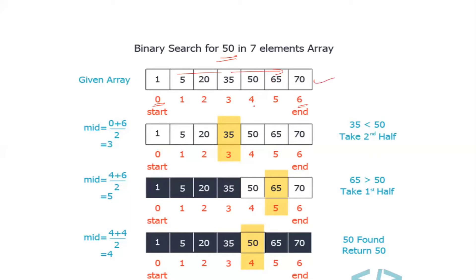We set the lower limit to 0 and upper limit to 6. The middle index is (0 + 6) / 2 = 3. The middle value at index 3 is 35. We compare: 35 is less than 50, so we take the right half.